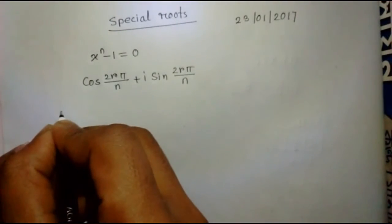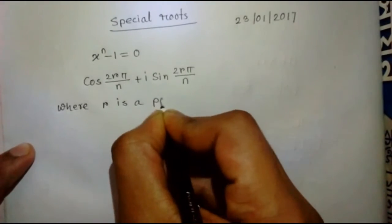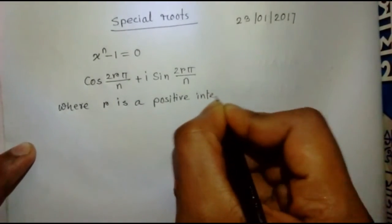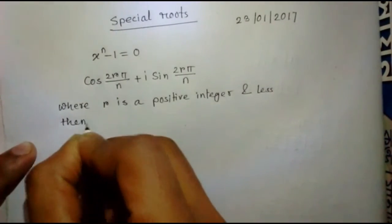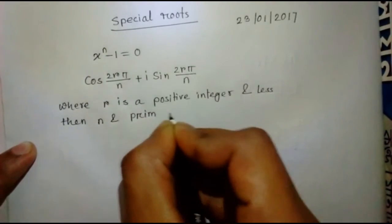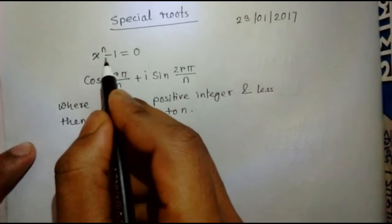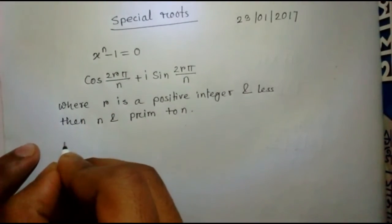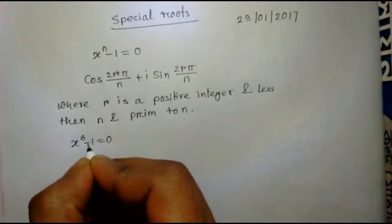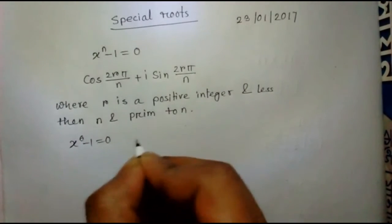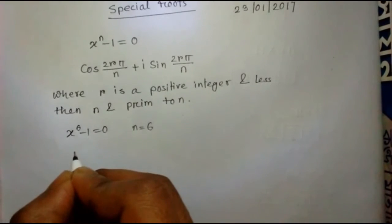Here, i is a complex number, n is the degree of the equation, and r is a positive integer where r is less than n and also r is prime to n. Let's apply the formula in an example: x to the power 6 minus 1 equals 0. Here n equals 6, so the formula becomes cos(2rπ/6) plus i·sin(2rπ/6).